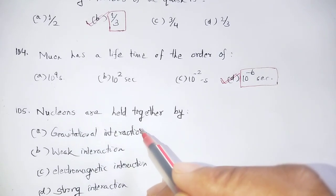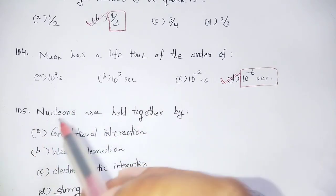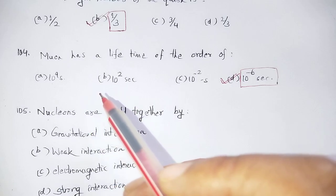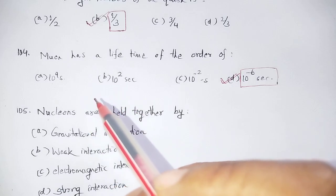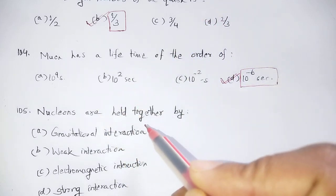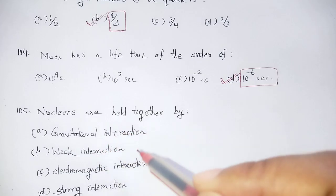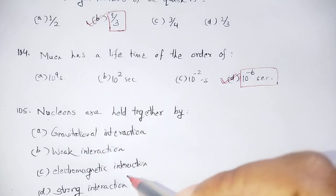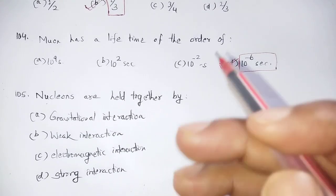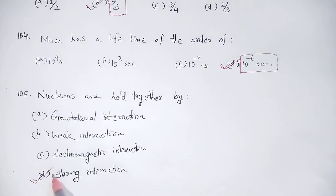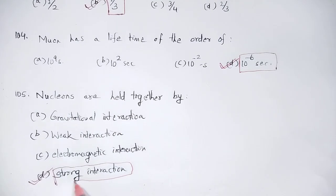Nucleons are held together by the strong interaction. The options are gravitational interaction, weak interaction, electromagnetic interaction, or strong interaction. Strong interaction is the correct answer — option number D.